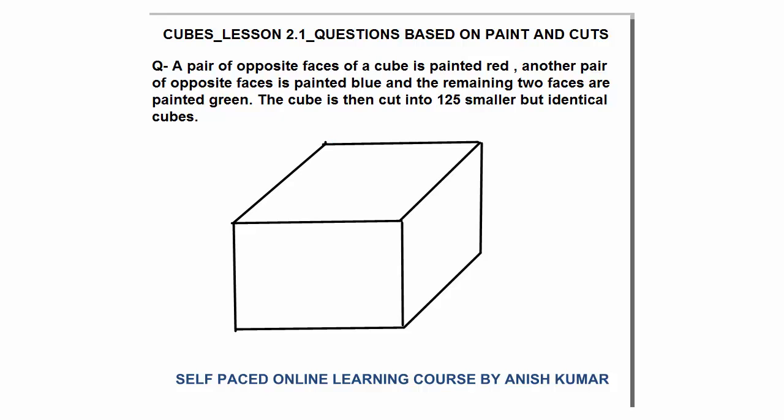Hello, this is Cubes lesson 2.1. In this I will discuss questions based on paint and cuts. A pair of opposite faces of a cube is painted red, another pair is painted blue, and the remaining two faces are painted green. Now the cube is cut into 125 smaller but identical cubes.